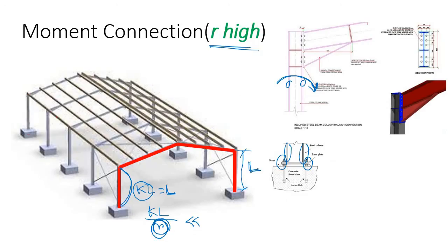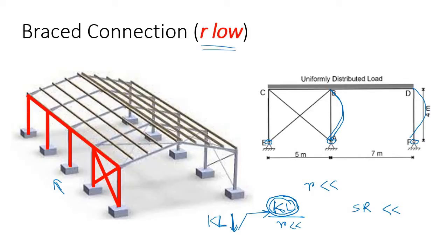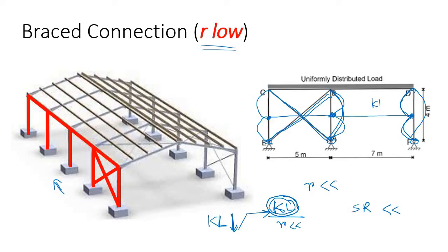To reduce the effective length, since bracing is already provided, we simply add pin-connected struts across the braced bay. Once these struts are in place, all columns in the braced bay will buckle in a half-wave pattern, making the effective length kL = L/2.